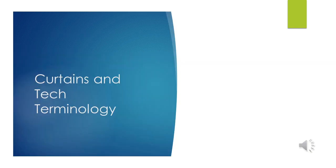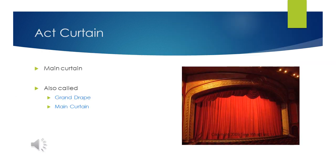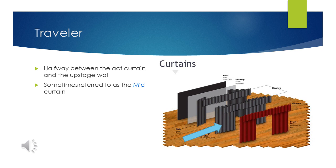Now for curtains and tech terminology. The act curtain is the main curtain, also called the grand drape and main curtain. It is often opened and closed to signify the end of an act, hence the name. The traveler is the curtain halfway between the act curtain and the upstage wall. It is often used as a halfway point for changing upstage from downstage, and is often referred to as the mid curtain. When we get to blocking, this curtain will help you figure out that halfway point.